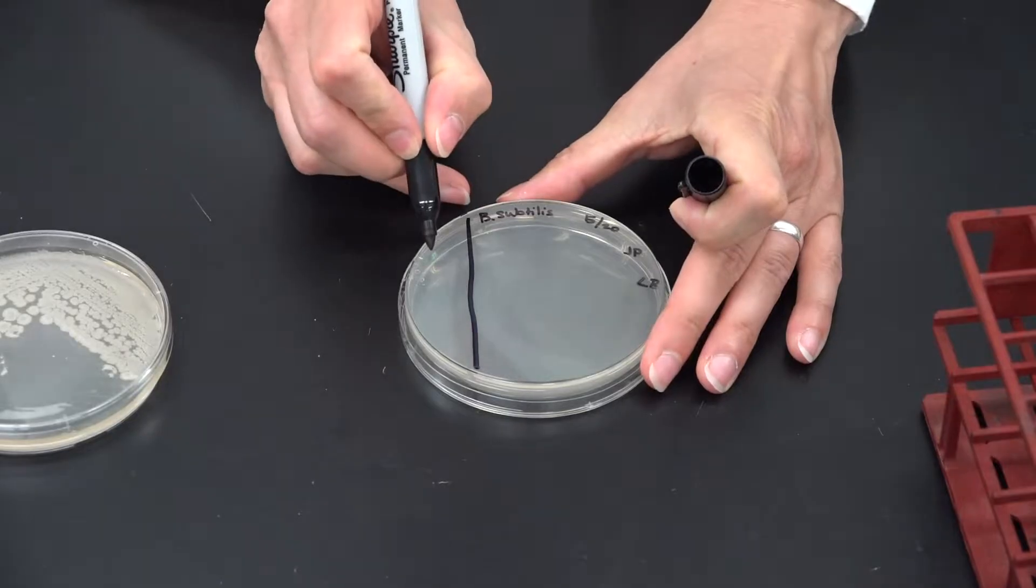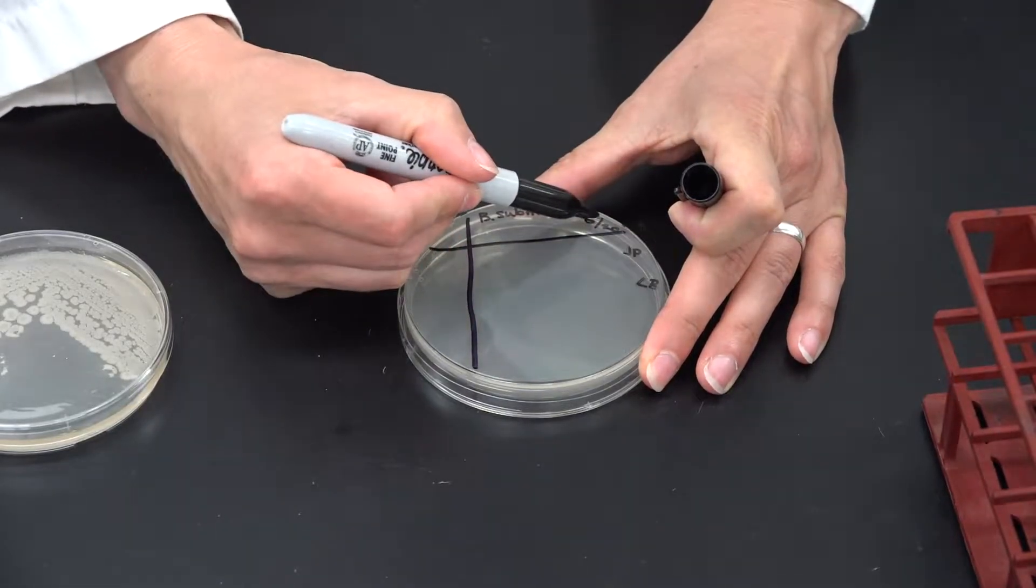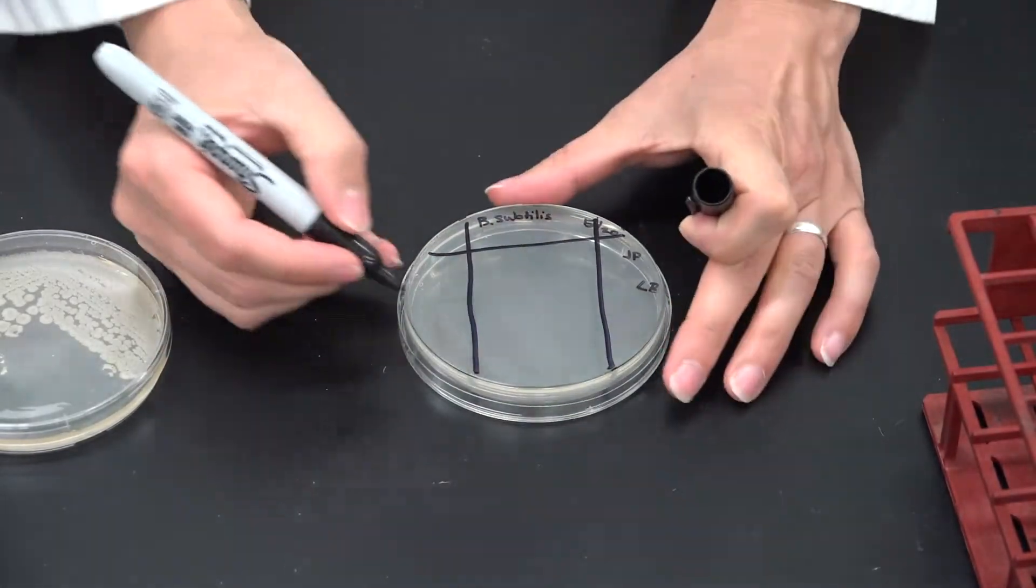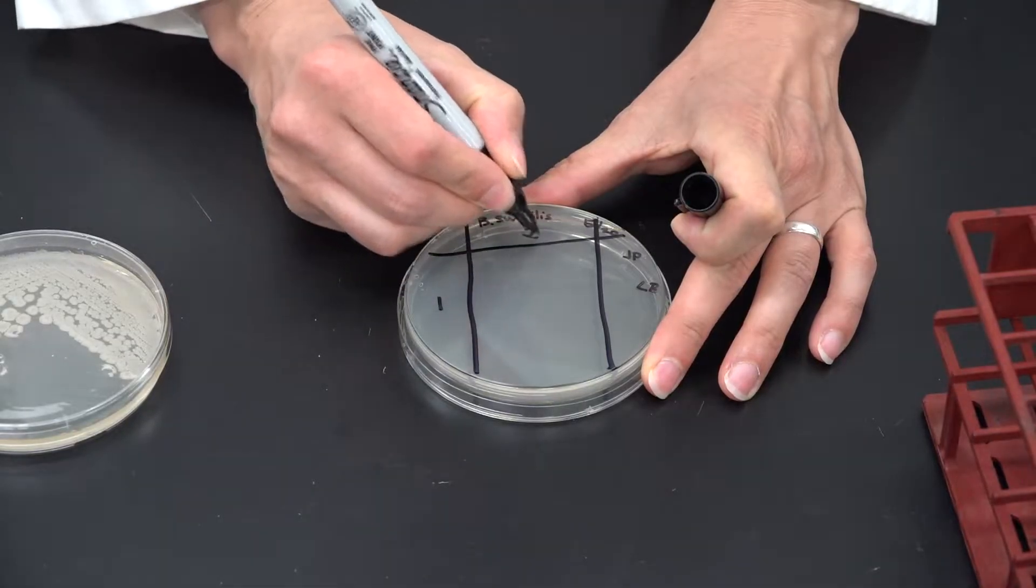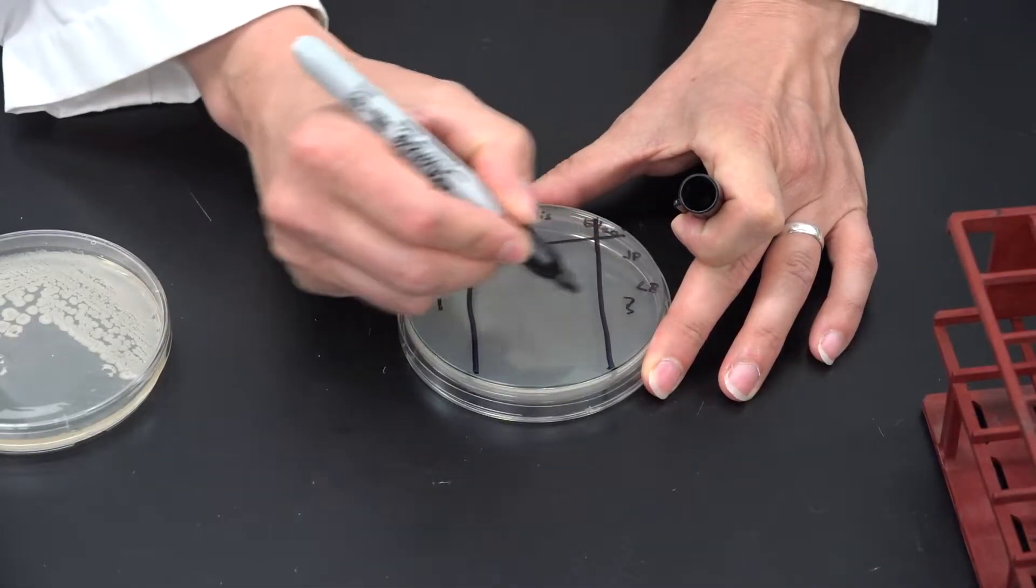On the back of the plate, take a marker and draw three lines, then label the quadrants as one, two, three, and four.